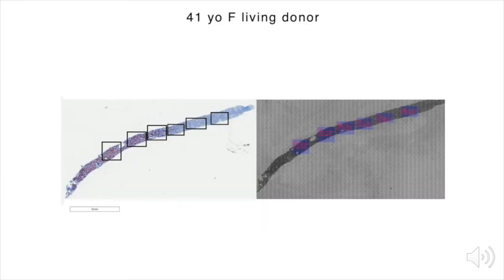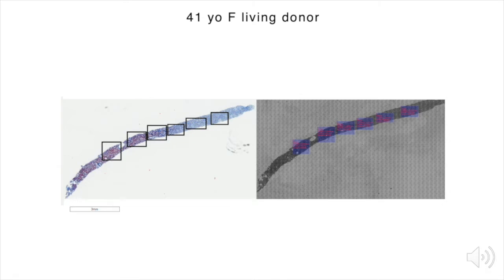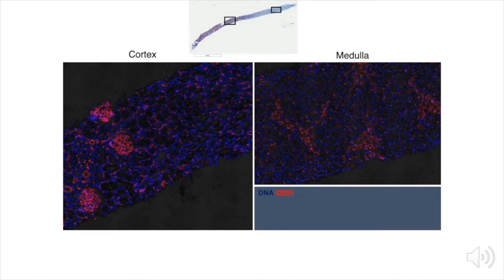Here you are seeing adjacent sections from a living donor kidney that was read as histopathologically normal by our renal pathologists. The boxes show regions that we have ablated and imaged with our antibody panel. Comparing IMC reconstructions from two of those box regions — one in cortex and one in medulla — you can see we are able to detect nuclei throughout, shown in blue. Sequentially layering on pseudocolored data, I am showing endothelial cells in red, which in the cortex are most abundant in glomeruli, and in the medulla in vasa and arteriola recta.